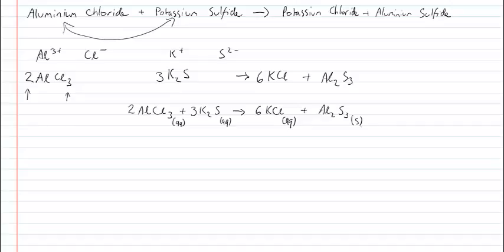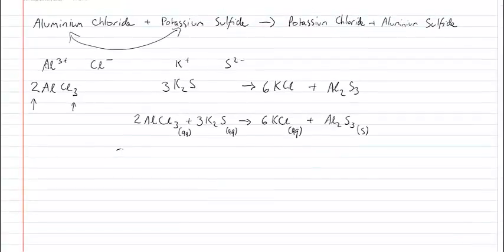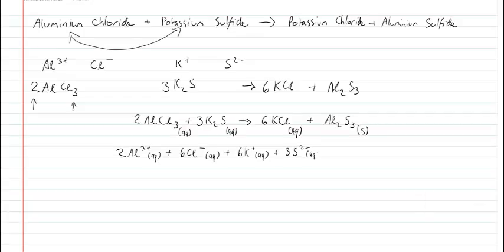Okay? So 2AlCl3 is 2 aluminum ions and 6 chlorine ions. Okay? So we have 2Al, and I remember Al is 3+, and we know that's aqueous, plus 6Cl-. Okay? Because we have 2Cl3s. That means there's 6 chlorine ions, and that is aqueous as well. Plus, we have 6 potassiums. 3K2s is 6. So we have 6K+, which is aqueous, plus 3 sulfurs, which is 2-. Okay? And again, that is aqueous.